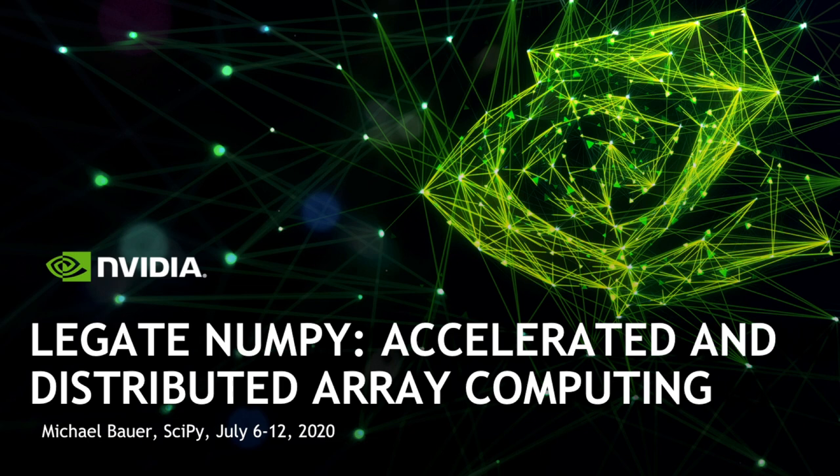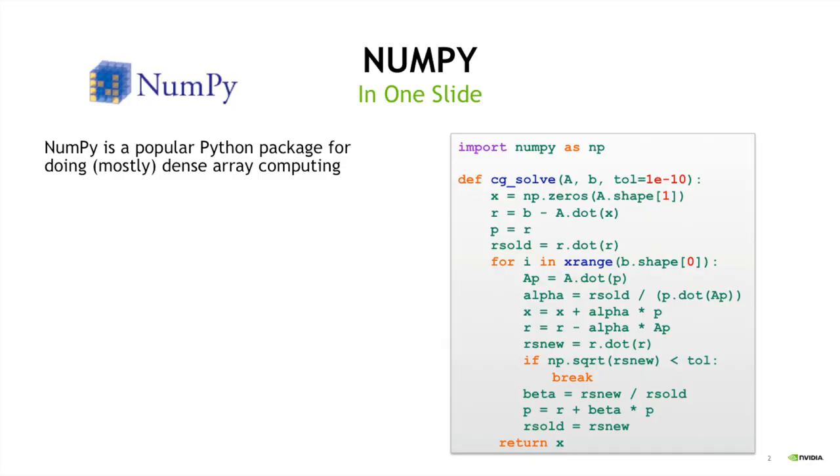Hi, my name is Mike Bauer. I'm a research scientist at NVIDIA Research. Today I'll be talking about a project I've been working on called Legate NumPy, which is all about delivering accelerated and distributed array computing to the masses.